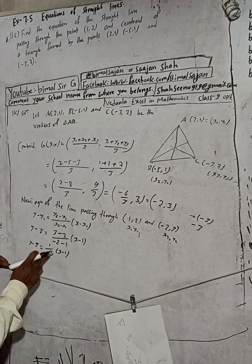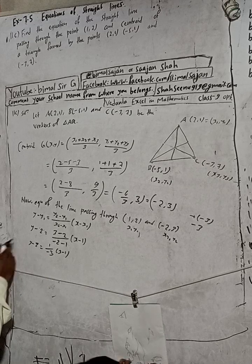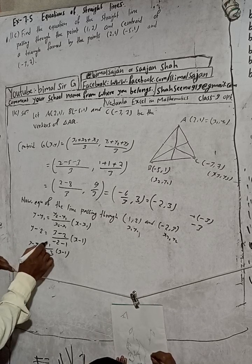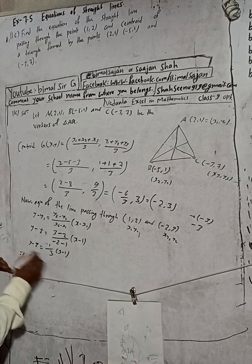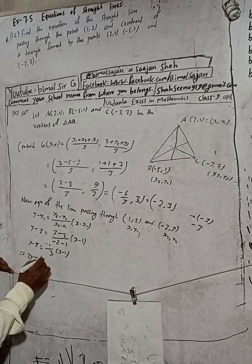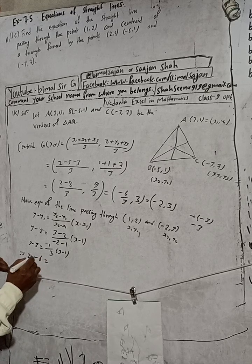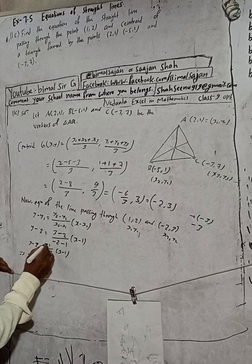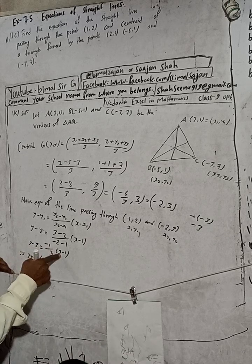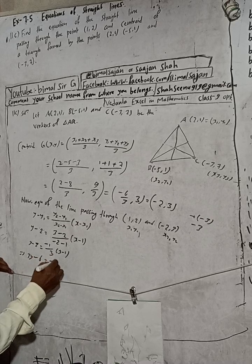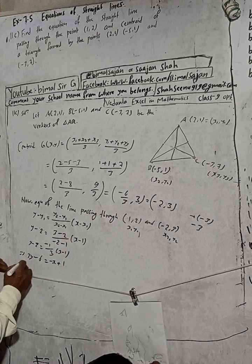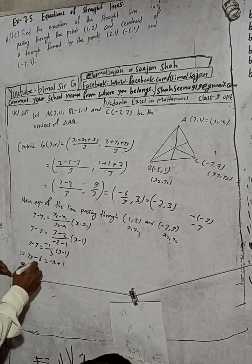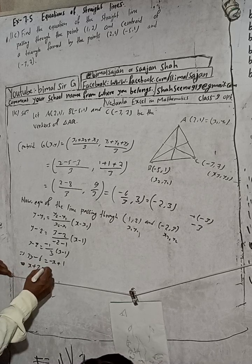Multiplying both sides by -3: -3(y - 2) = x - 1, so -3y + 6 = x - 1. Taking the x term to the other side: x + 3y = 6 + 1.